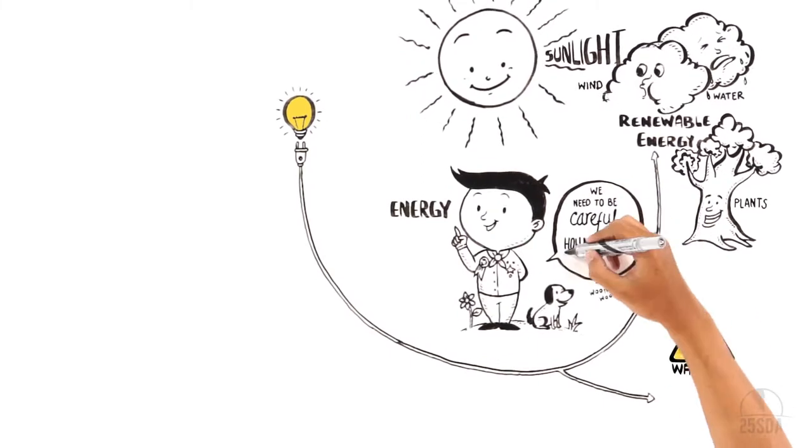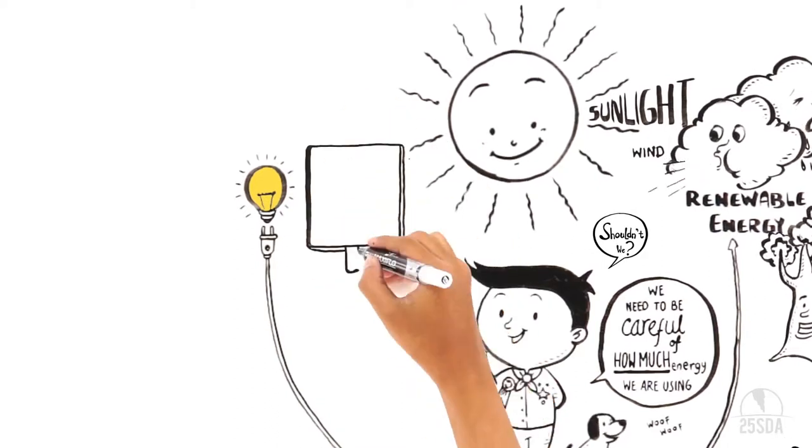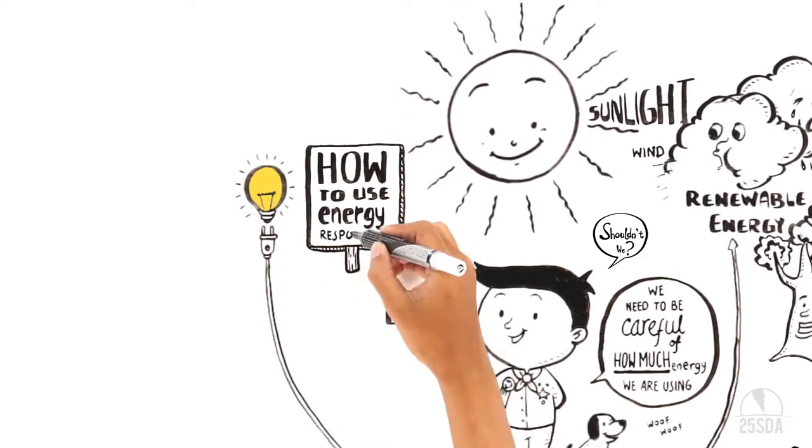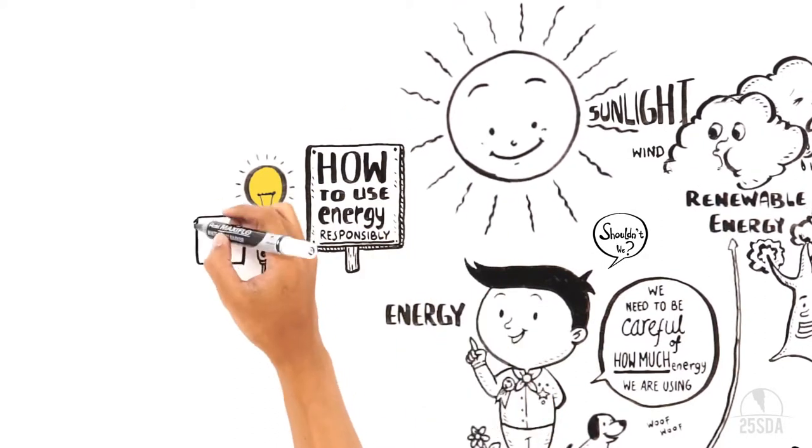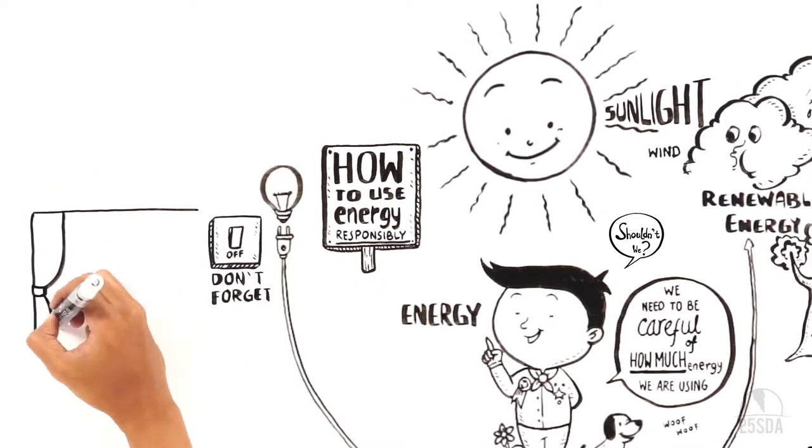So we really should make sure we're not using too much energy. Shouldn't we? Does anybody know how we can use energy the smart way? If you're leaving a room for more than five minutes, don't forget, turn the light off.